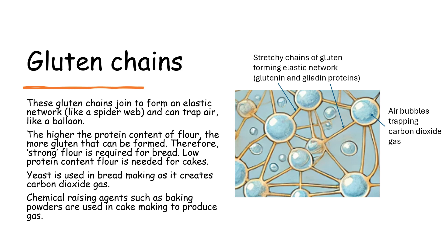The higher the protein content of flour, the more gluten that can be formed. Therefore strong flour is required for bread, while low protein content flour is needed for cakes. Yeast is used in bread making as it creates carbon dioxide gas, and chemical raising agents such as baking powders are used in cake making to also produce gas.